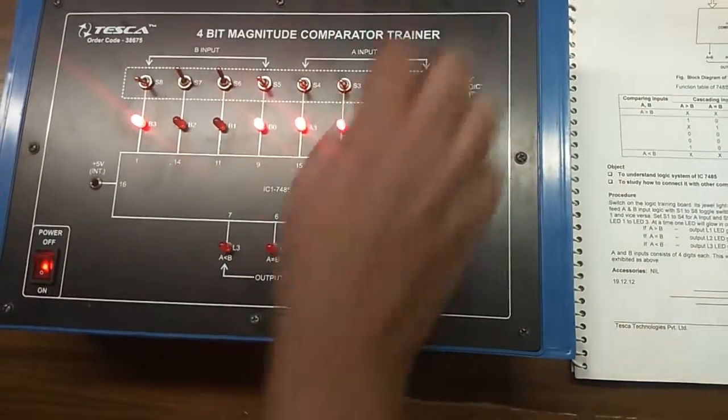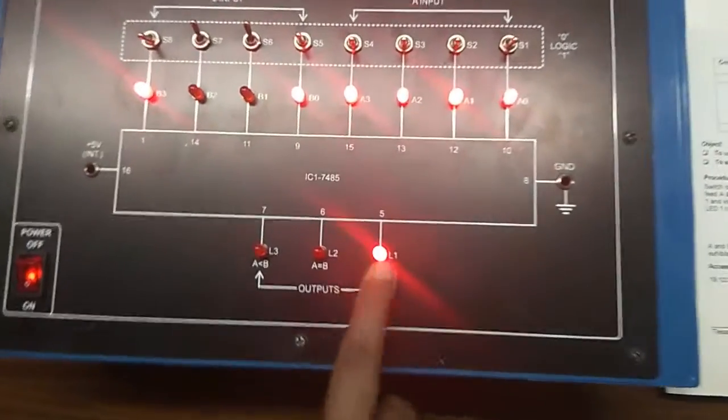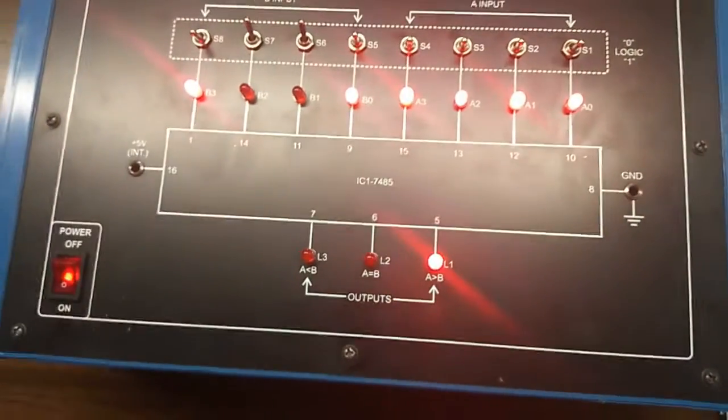If I give 1111, which is 15, and this is 9, the result is A greater than B.